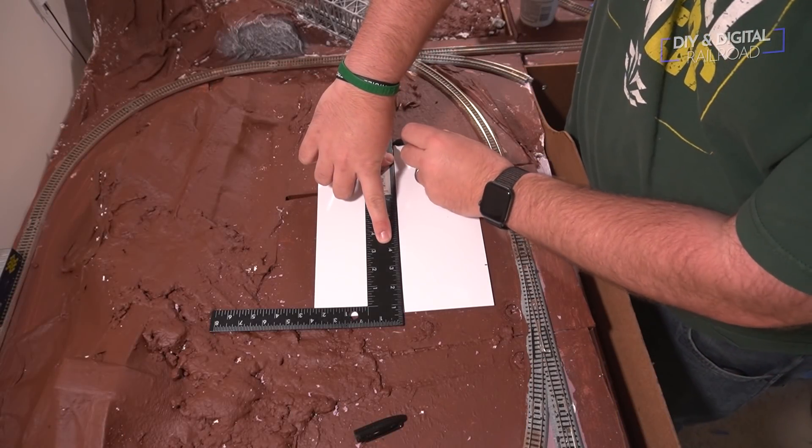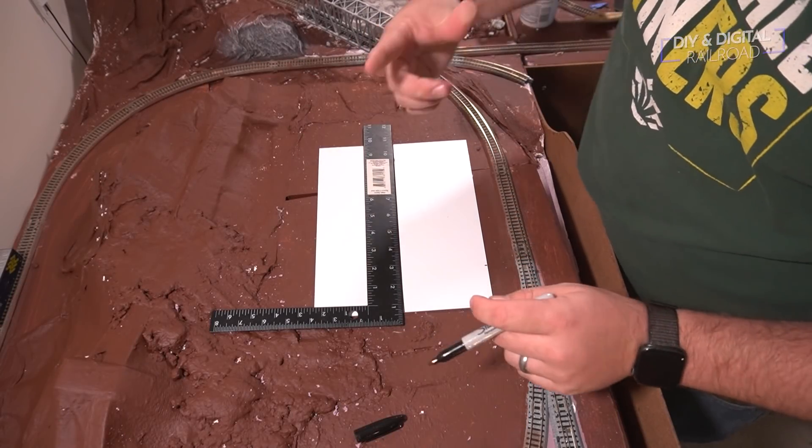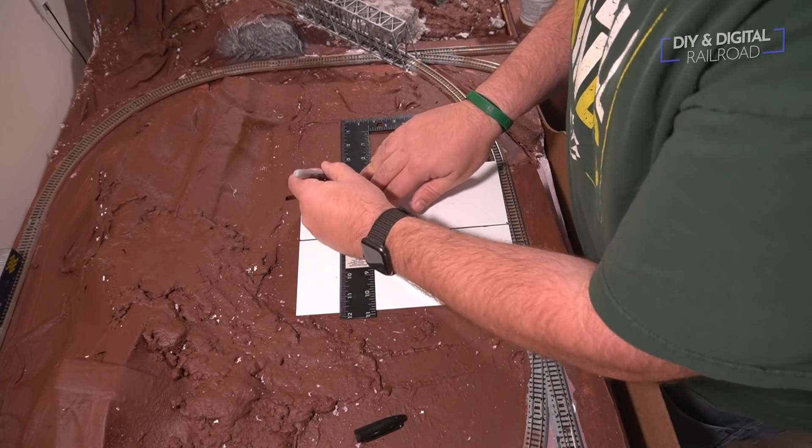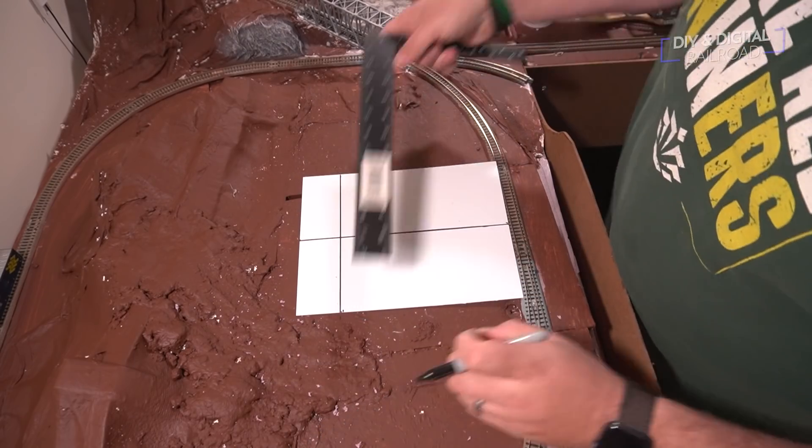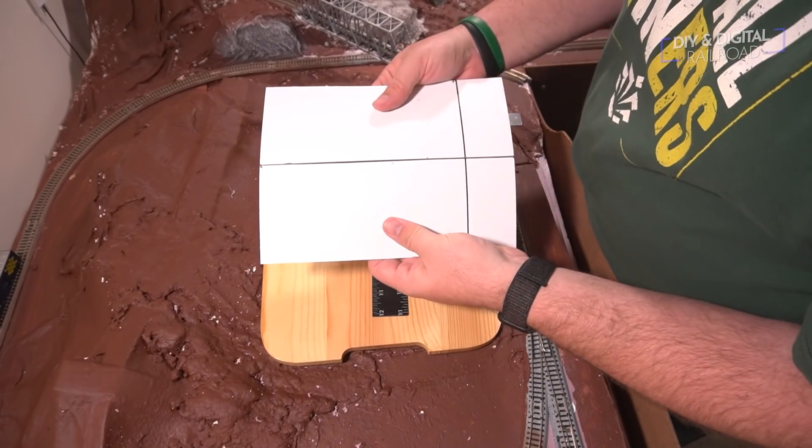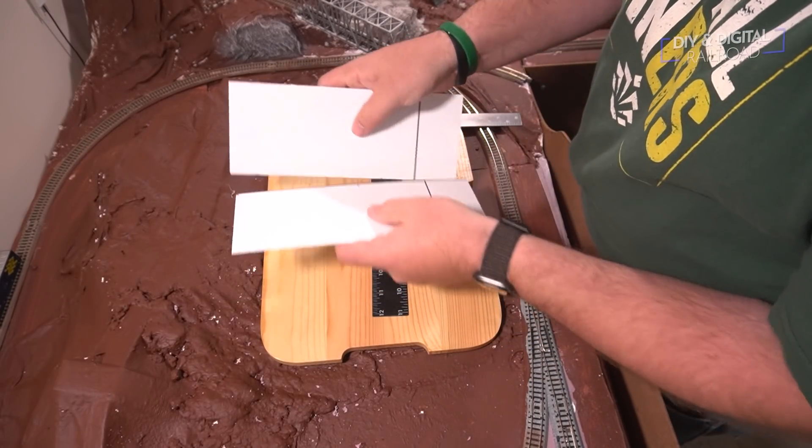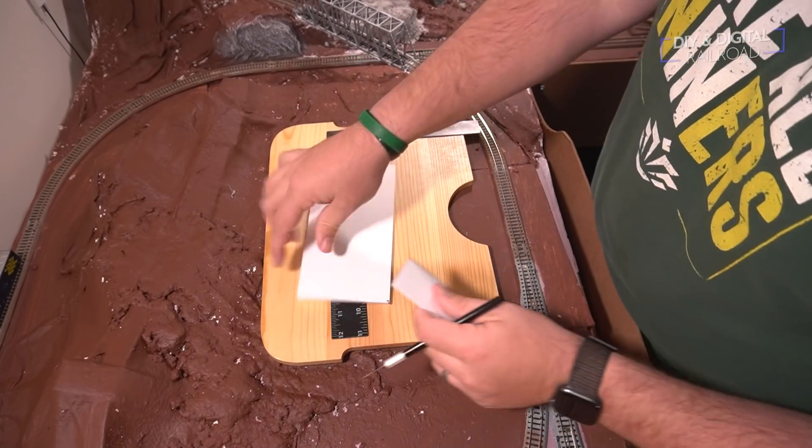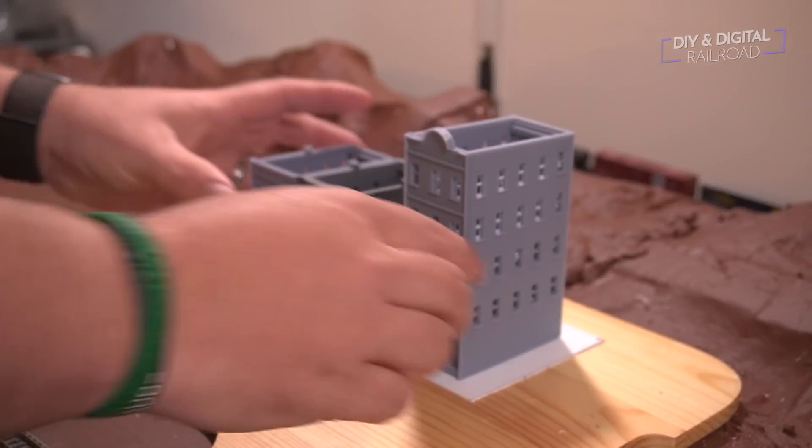Now when I marked for the scoring lines, what I did was I basically just scored the styrene and then I was able to snap it. This is one of the things I really like about thinner styrene is it gives you some nice clean lines when you can score it using a ruler or some sort of guide. And then you just snap it right off.